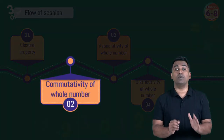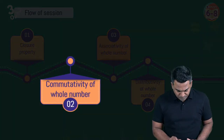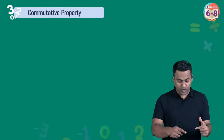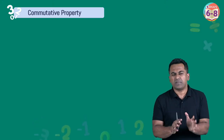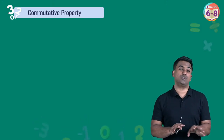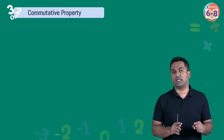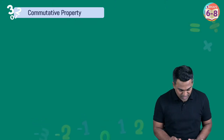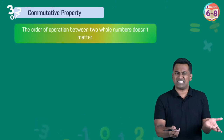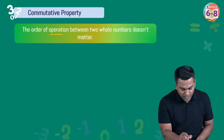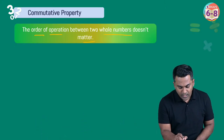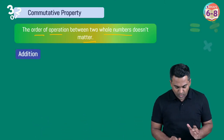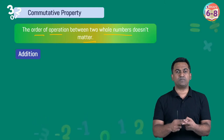Now let's move on to the property of commutativity. A tip on notes: these terms can confuse you — you might forget whether something is associative or commutative — so prepare good notes. The commutative property says the order of operation between two whole numbers does not matter. We'll check all four operations.